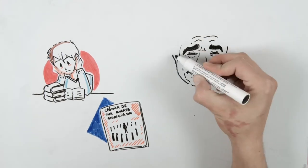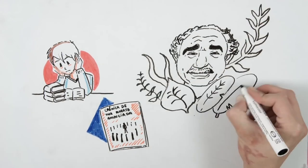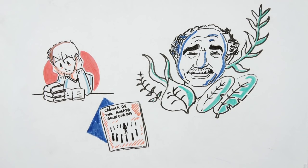Chronicle of a Death Foretold is a journalistic chronicle written by Gabriel García Márquez. Based on real events, it has many characters and points of view.